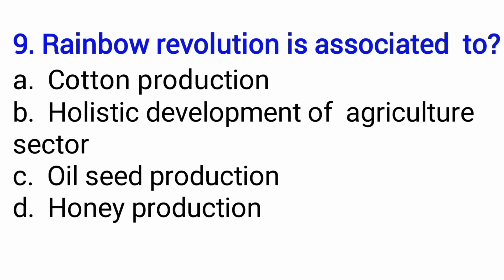Rainbow revolution is associated with — Indra Dhanush Kranti kisse sambandit hai? As you know, rainbow has many colors, that is why it has this name. Rainbow revolution, or Indra Dhanush Kranti, is related to the overall development of the agriculture sector. So the answer is option B — holistic development of the agriculture sector.